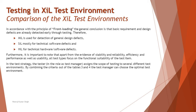In the test strategy, the test manager assigns the scope of testing to several different test environments. By combining the criteria from tables three and four — as discussed in this and the previous tutorial — the test manager can choose the optimal test environment. The test manager must critically consider the scope of various testing objectives, determining which activities should be conducted at which point in time and in which test environment, then scheduling and aligning them to address the key objectives of each test specification.